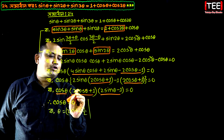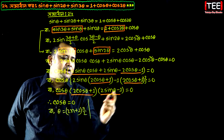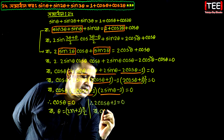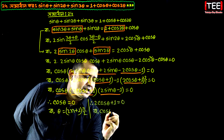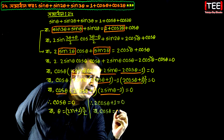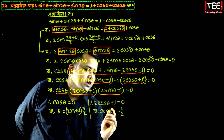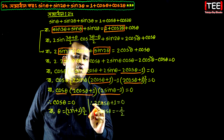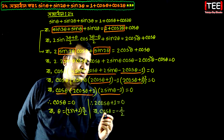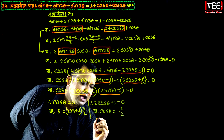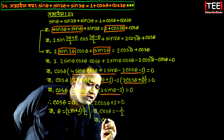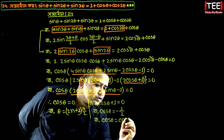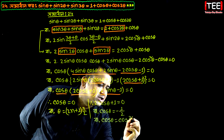We write 2 cos theta plus 1 equal to 0. 2 cos theta equal to minus 1 by 2. 1 is plus, plus 1 is minus, and 2 is minus. We write 2 cos theta equal to cos 2 pi by 3.